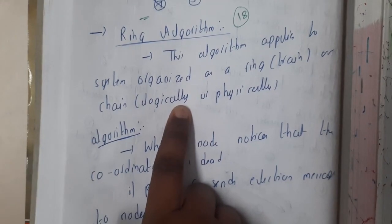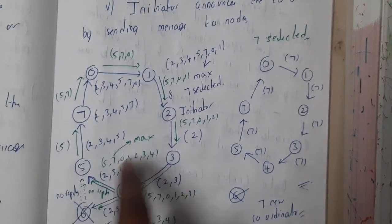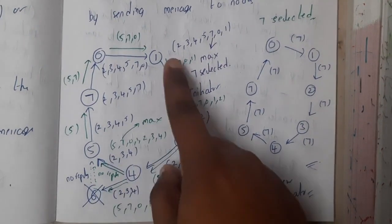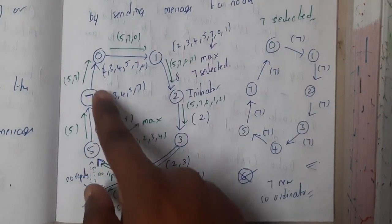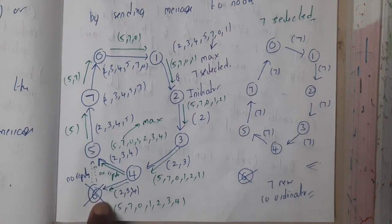If you understand the logic behind it, it will be simple. Assume that this is our distributed network or distributed system. Here we are having various systems: one, two, three, four, five, seven, zero. Our previous leader is six - our coordinator is six.